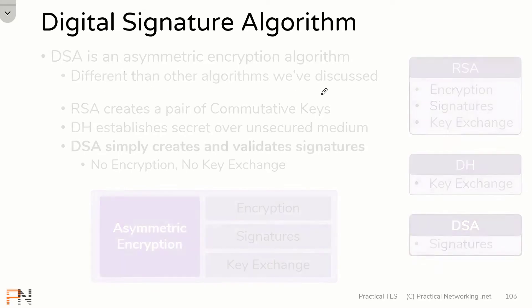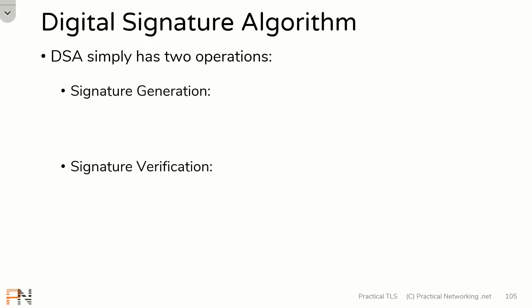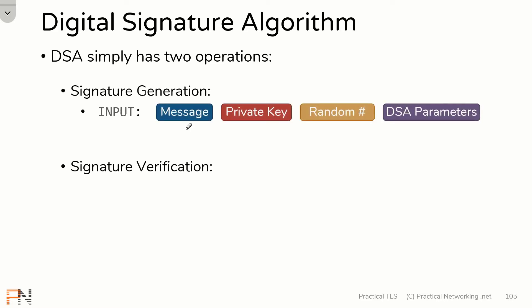The digital signature algorithm is an asymmetric encryption algorithm with only two operations: signature generation and signature verification. The signature generation operation involves four things: the message you're trying to sign, the private key you're going to sign it with, a random number, and DSA parameters. These DSA parameters are values required for the DSA math, much like the prime number and generator are values required in Diffie-Hellman.